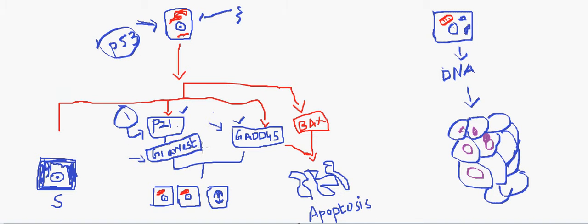During the temporary cell cycle arrest, several mechanisms are engaged to repair the DNA. In case of successful repair, the cells again enter mitotic division and can undergo cell division. This is the first phase — temporary cell cycle arrest in the G1 phase — which gives time for the cell to undergo DNA repair mechanisms. If the repair mechanisms are successful, the cells can enter the cell division phase.